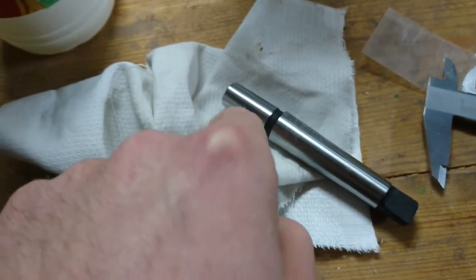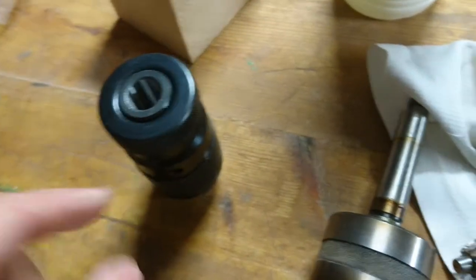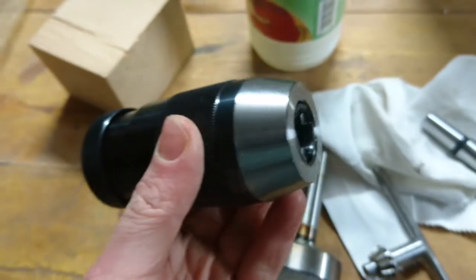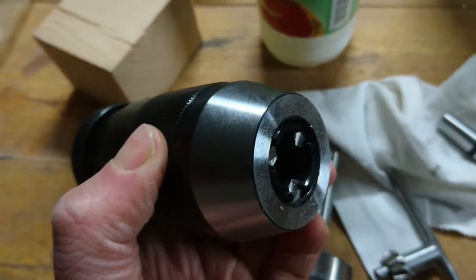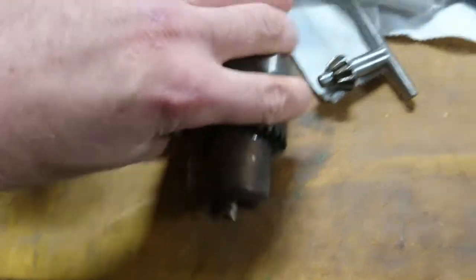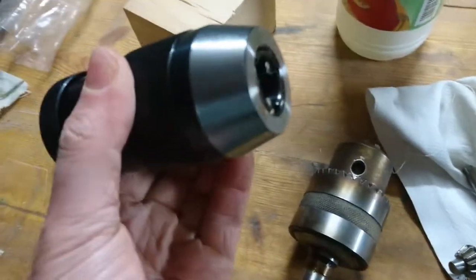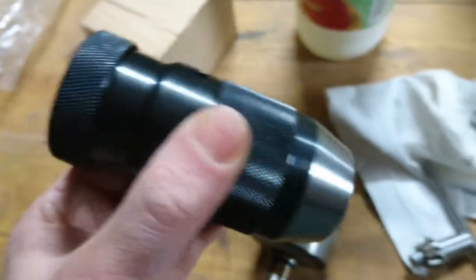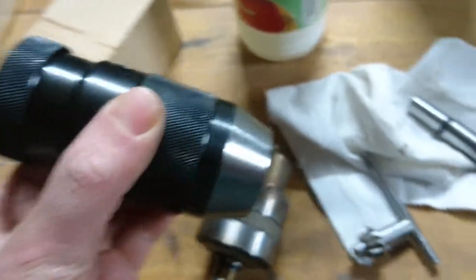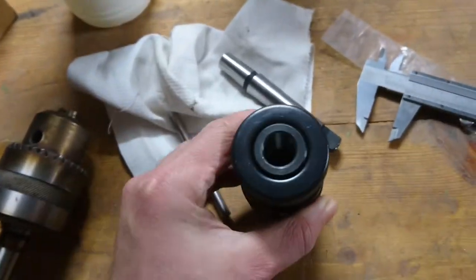So now we don't want to touch this part anymore because it needs to fit in here. Now there is one last thing you need to check, and that is that the jaws, so these protruding things, are in fact no longer protruding. Otherwise it might damage the drill chuck in the next step.